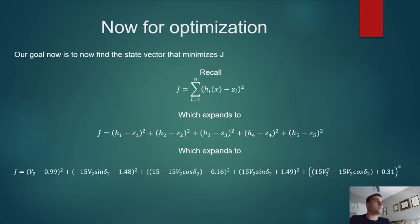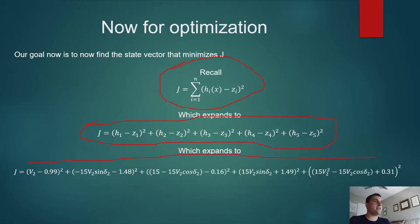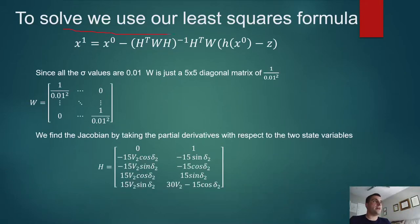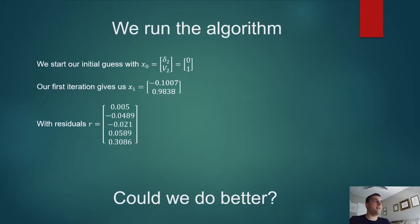Now for optimization. As we recall earlier, our goal is to minimize J, which is simply the H values minus the Z values squared and added together. So it expands out to this. Using substitution with H that we just got, it expands out to this. Big, long, and nasty. Then, using the equation, the algorithm that we came up with earlier for least squares, and using this weighted matrix, which is just nothing more than a whole bunch of weights in a diagonalized matrix to make the matrix multiplication easier. We get this for our Jacobian of our H equations. We now run the algorithm. And the nice thing about the least squares algorithm is it's auto-correcting. You can start with any guess and it's going to lead you in the right direction. So we start with the initial guess of zero for the angle and one for the voltage.